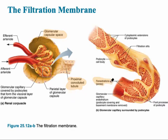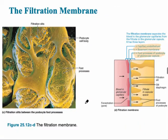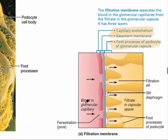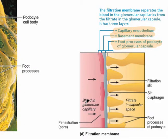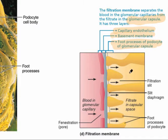Fluid has to fit through large holes or pores called fenestrations. Everything passes through except plasma proteins, red blood cells, and white blood cells. In fact, white blood cells found in the urine are one sign of an infection, since they're not supposed to pass through. Anything that does fit through the filtration membrane ends up going into the proximal convoluted tubule.